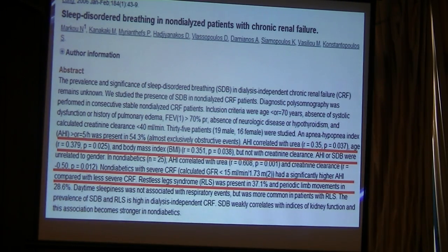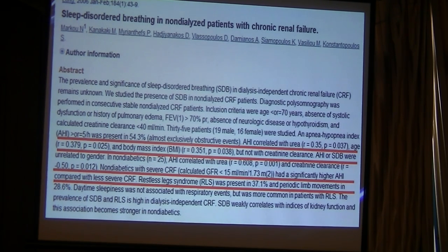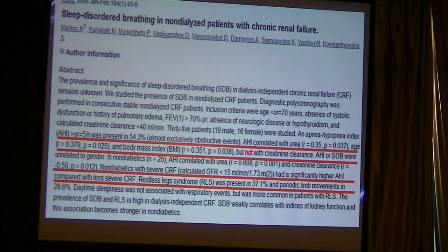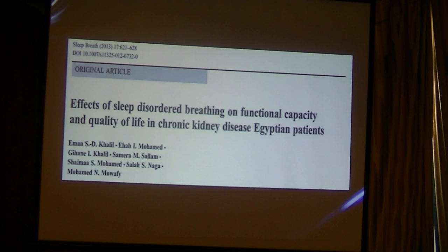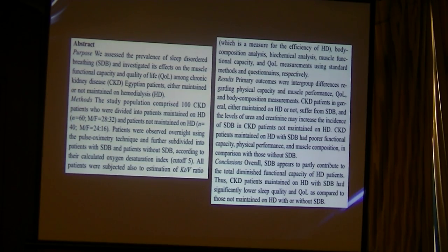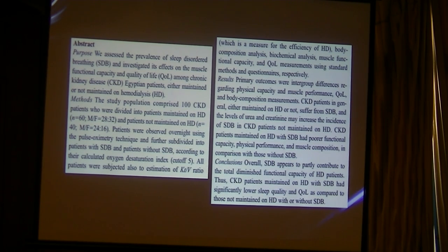Another study in 2006, in chronic hemodialysis patients, showed that 53–54% of patients have obstructive sleep apnea. All obstructive sleep apnea cases were related to urea, age, and body mass index, but also associated with creatinine clearance. When non-dialysis patients were found, there was a significant correlation with creatinine clearance, urea, and body mass index. A 2015 study showed the same — sleep disorder frequency was correlated with creatinine clearance and blood urea nitrogen-to-creatinine ratio.